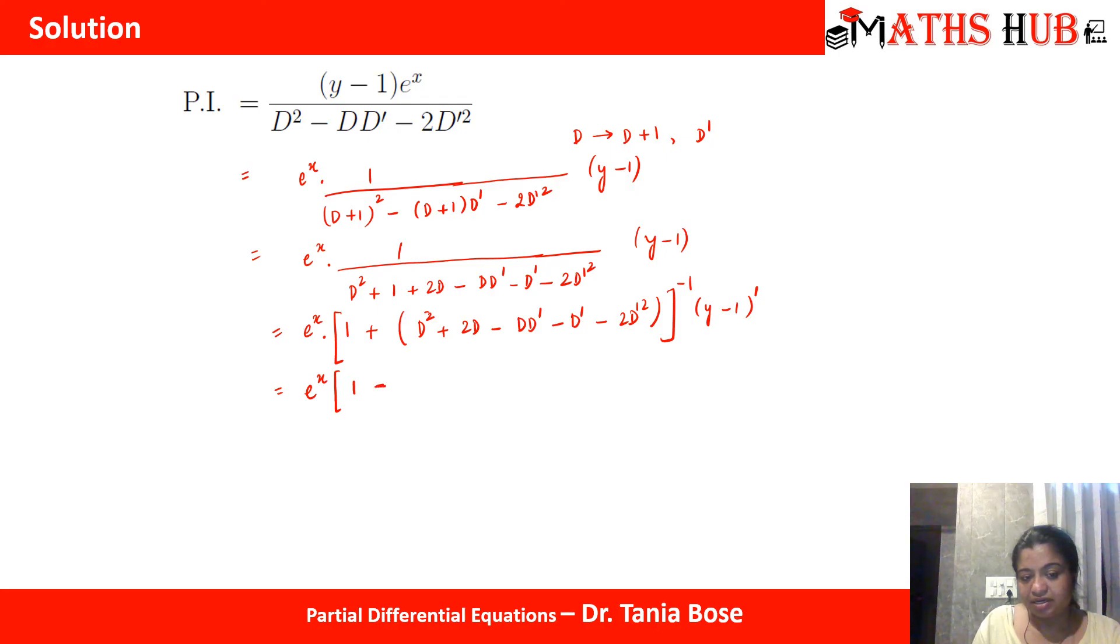d square will become 0 because there are no terms of x. 2d will also become 0 because there is no term of x. d d dash will also become 0 because d will make it 0. So now we have minus d dash. Minus d dash will become plus d dash. And then we have minus 2 d dash square. Since the derivative is carrying sign, double derivative, and we have (y minus 1), double derivative with respect to y will become 0. And subsequently when you take the higher order terms they will all become 0. So we are only left with (1 plus d dash) multiplied with (y minus 1).